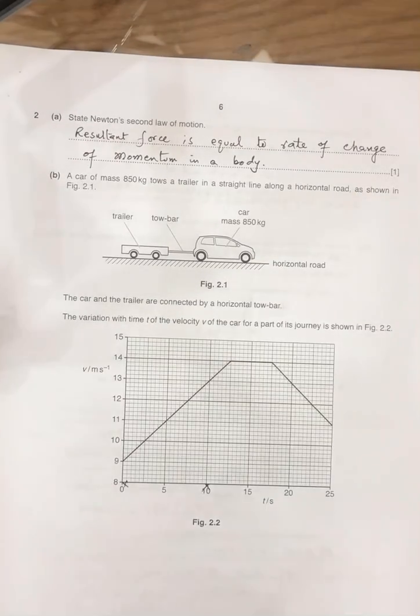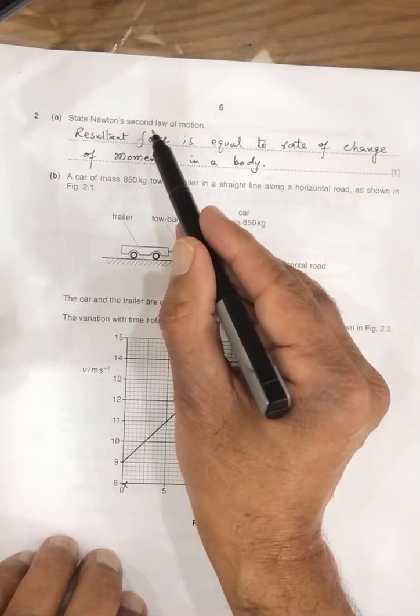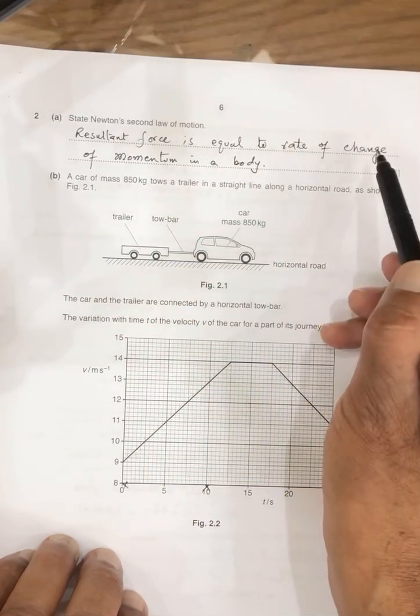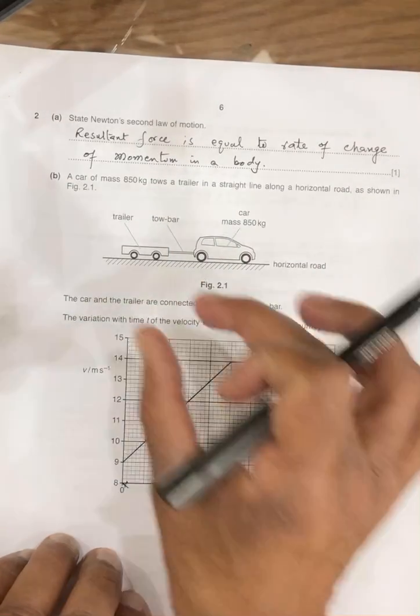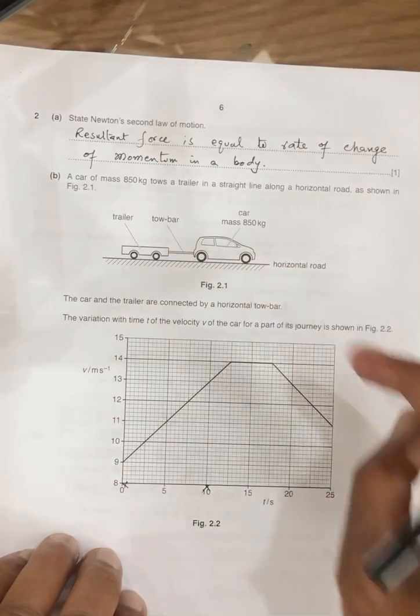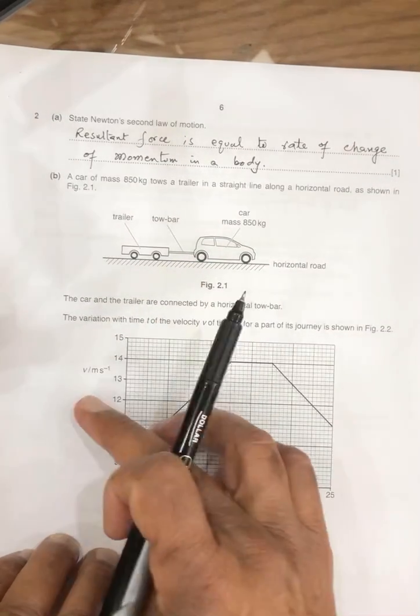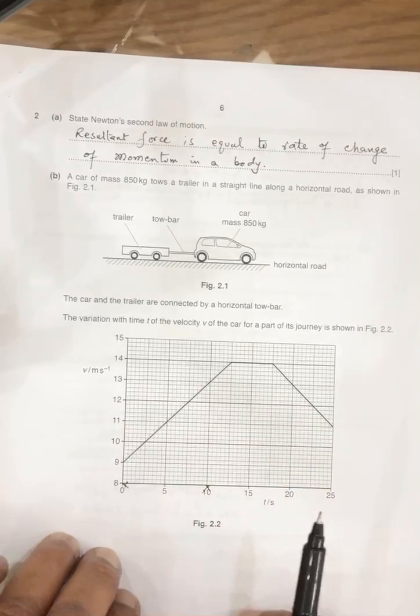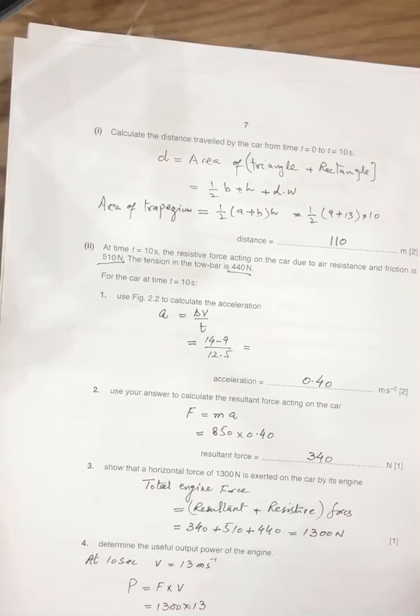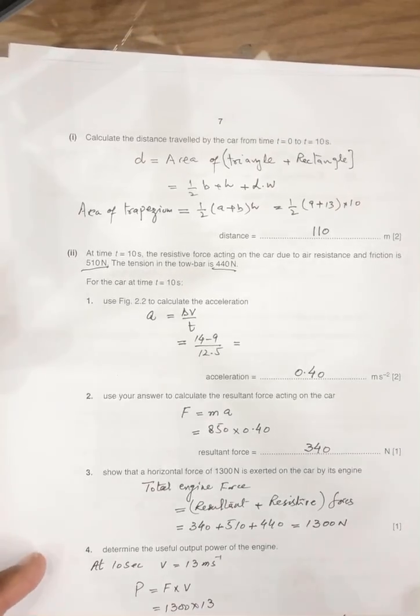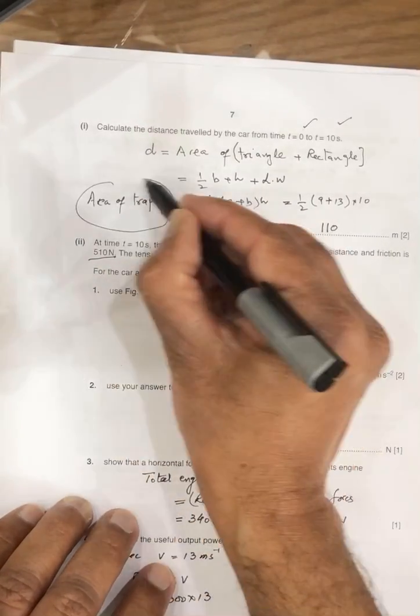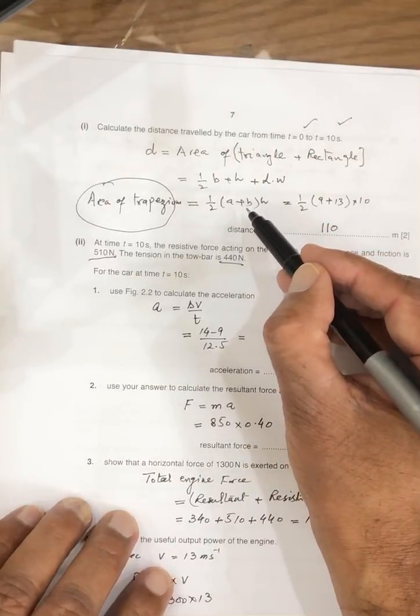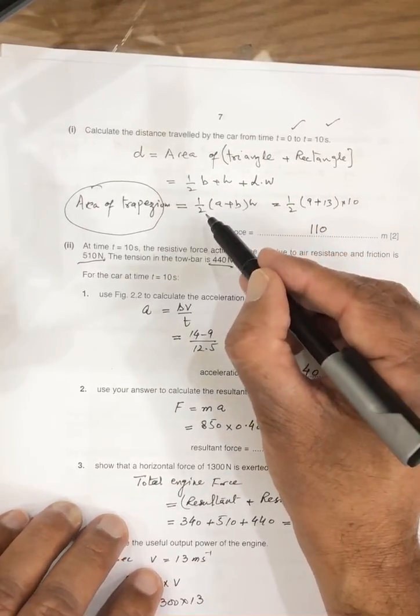Now, move to next question, question number 2. State Newton's second law: resultant force is equal to the rate of change of momentum in a body, and this is trailer, this is tow bar, this mass, and the velocity speed graph is given, so this is VT graph. So, question is, calculate the distance travelled by the car from T0 to T10.